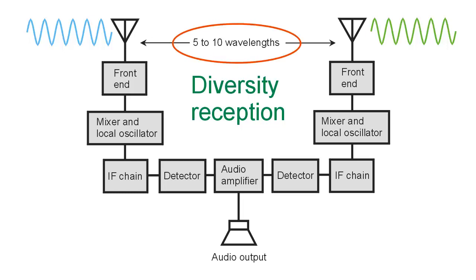Now that can be a significant distance, particularly at the frequencies where diversity reception is most commonly used, which is in the high frequencies — 3 to 30 megahertz — also known as the shortwave bands, although that's somewhat of a misnomer these days because the waves are not particularly short. For example, at 10 megahertz a wavelength in free space is approximately equal to 30 meters or around 100 feet.